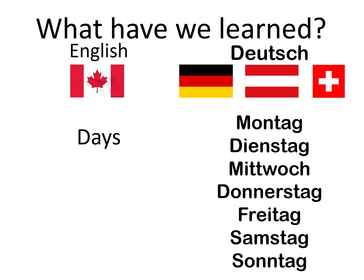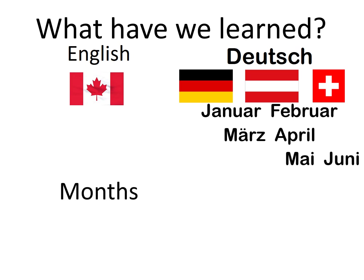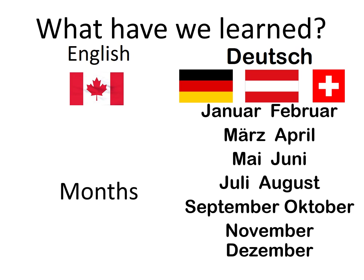We not only learned the days of the week, we learned the months of the year. Many of these are very similar to the names of the months in English. Repeat after me. Januar, Februar, März, April, Mai, Juni, Juli, August, September, Oktober, November, and Dezember. There we have it — the twelve months of the year.